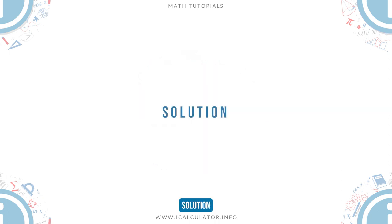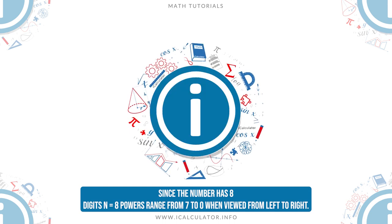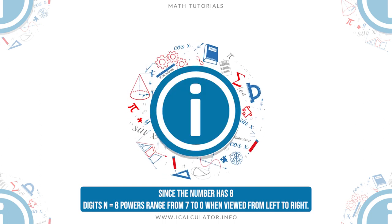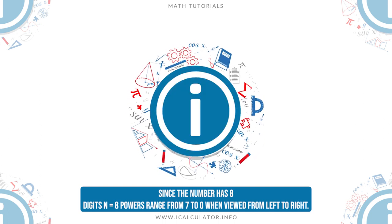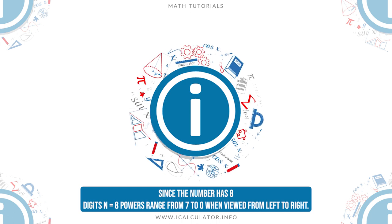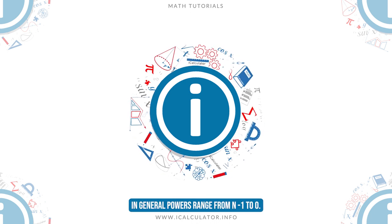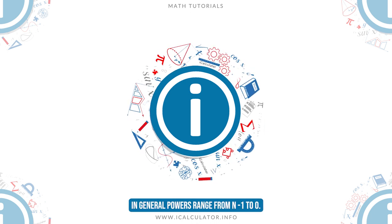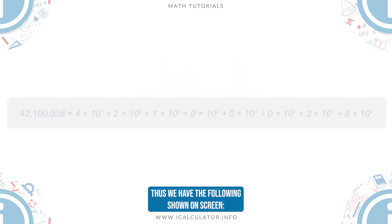Solution: since the number has 8 digits, n equals 8, powers range from 7 to 0 when viewed from left to right. This is because in general powers range from n minus 1 to 0. Thus, we have the following shown on screen.